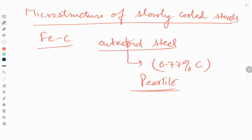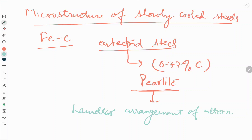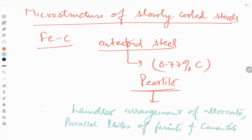Pearlite is a lamellar arrangement of alternate parallel plates of ferrite and cementite. So this is the definition of pearlite.